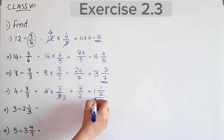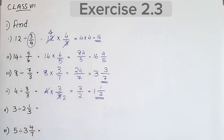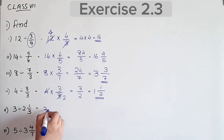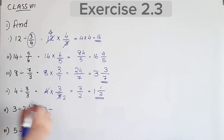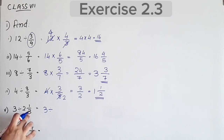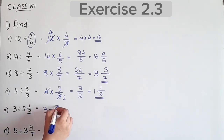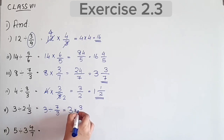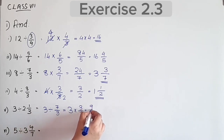The denominator is 2. Next question: 3 divided by 2⅓. Convert the mixed fraction: 2⅓ becomes 7/3. Then 7/3: 7 equals 9 — result involves 9.